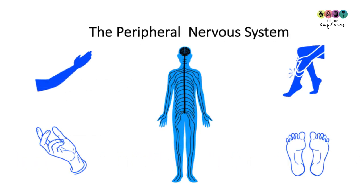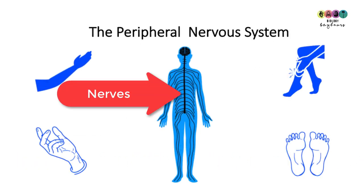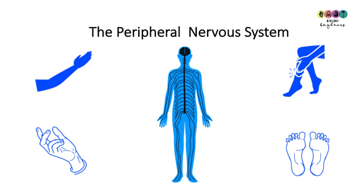The peripheral nervous system is made up of the nerves that come out or extend from the spinal cord. Some of them extend right down to the very tips of your fingers and the very tips of your big toe.